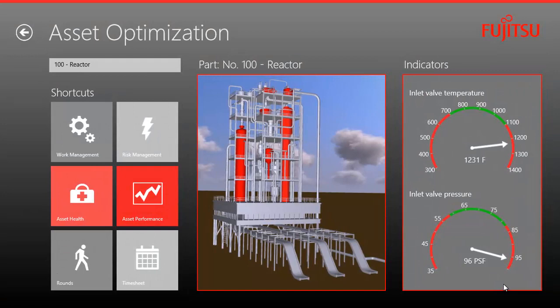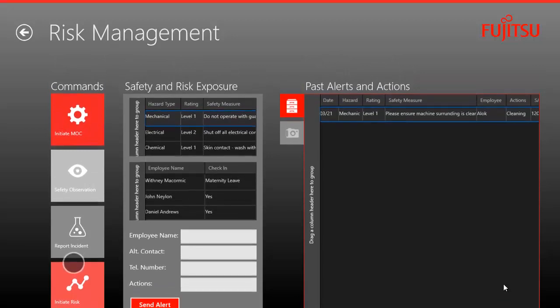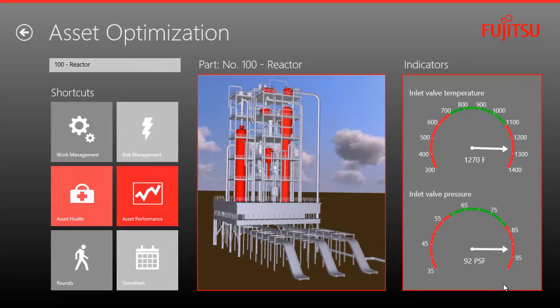By clicking on risk management, I can evaluate my current exposure to both risk and safety when solving this specific issue. I can see past alerts and actions from all Rydon locations and action them through reports or post observations. Thus far, I've properly evaluated the asset's health, performance, and risk related to both the plant in general and the technicians applying the fix.